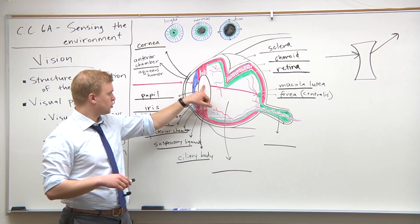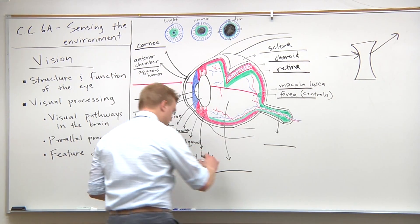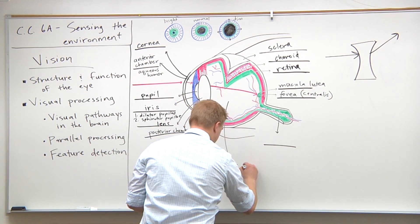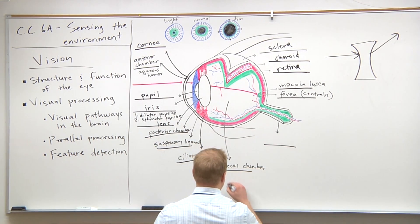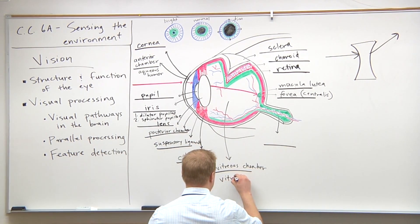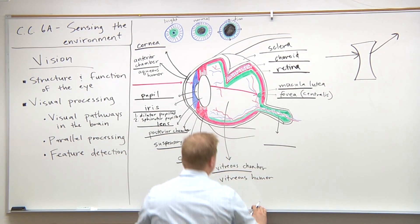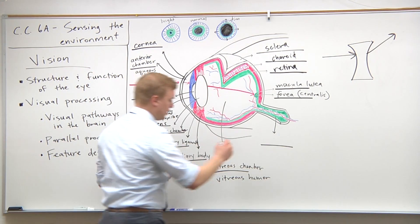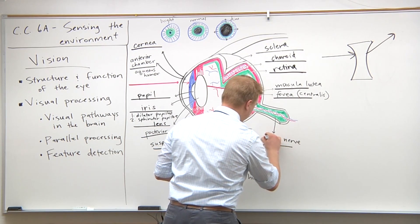The light ray goes through the lens, then through the vitreous chamber. What do you think the vitreous chamber is filled with? Exactly, vitreous humor. Right here is the optic nerve, made up of optic fibers. We'll talk more about this with the retina.